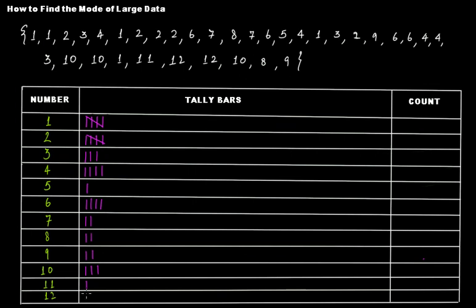Now let's write the final counts: value one is five, value two is five, value three is three, value four is four, value five is one, value six is four, value seven is two, value eight is two, value nine is two, value ten is three, value eleven is one, and value twelve is two. Clearly, we have two values with a count of five.